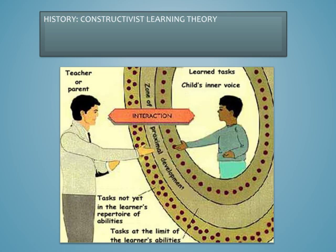Another important figure in constructivist history is Lev Vygotsky and his theories about language. In his view, language is captured and gradually internalized by the child's social relationship with the environment. Learners present areas of non-knowledge and areas where material is yet to be known — this area is called Vygotsky's zone of proximal development.